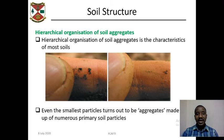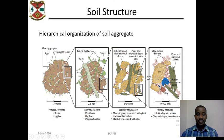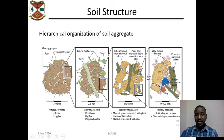The hierarchical organization of soil aggregates is a characteristic of most soils. Even the smallest particles turn out to be aggregates made up of numerous primary soil particles, as seen in this picture. If we take an aggregate and zoom in, we see micro-aggregates. Zooming further into the micro-aggregate, we see sub-micro-aggregates. Zooming into those, we see the primary particles — silt, clay, and sand.